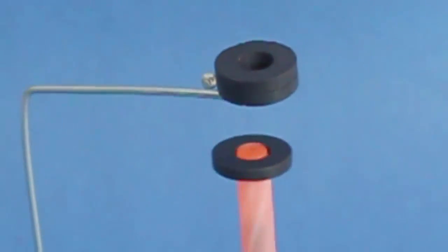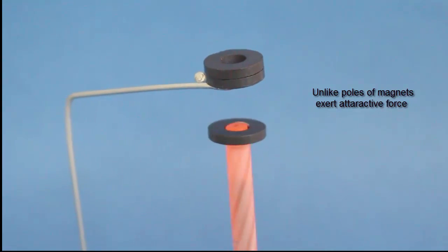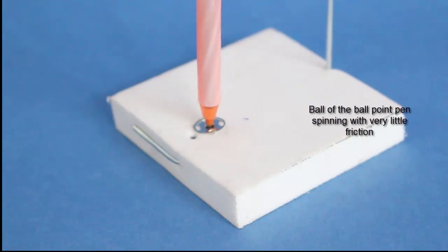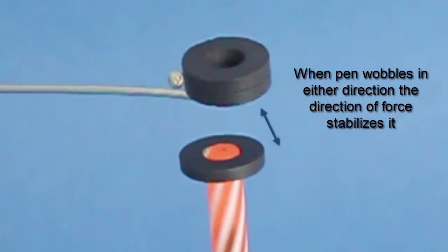Here is a close-up view of the standing spinning pen. The pen top will spin in the button with little friction. The wobble of the pen will be stabilized.